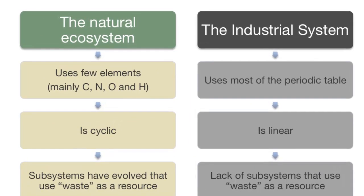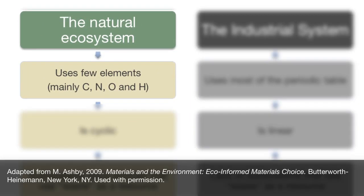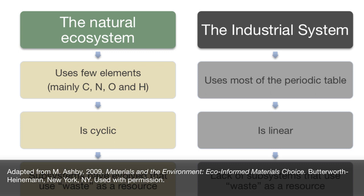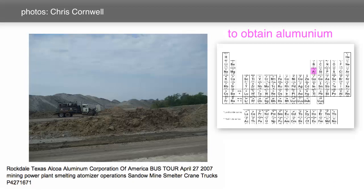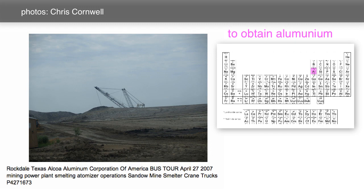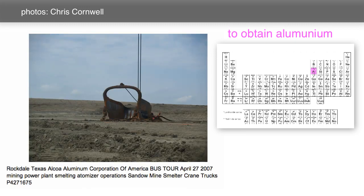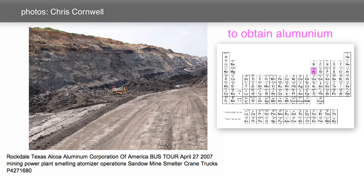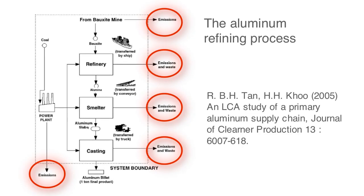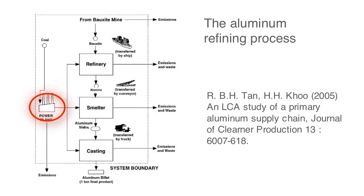Nature's designs use few elements — mainly carbon, nitrogen, oxygen, and hydrogen. These nutrients are readily available in abundance from air, water, and soil. By contrast, man-made systems use most of the periodic table of elements. The elements in man-made systems are primarily stored in the Earth's crust in diluted concentrations and non-useful chemical forms. As a consequence, obtaining them requires processes that physically degrade ecosystems and require a large expense of energy and water.